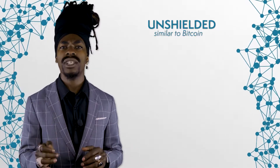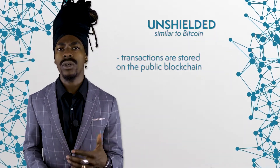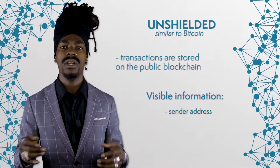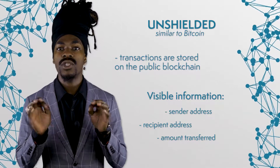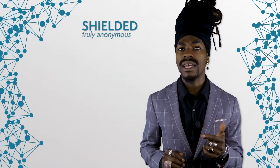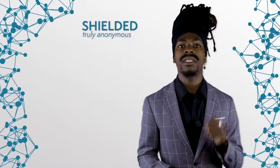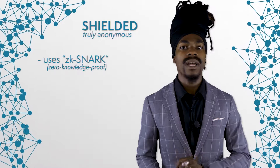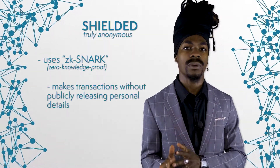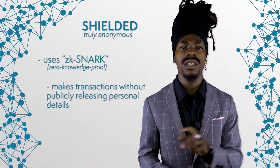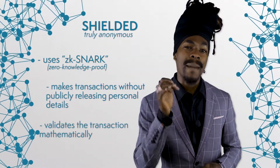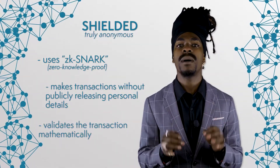Users of Zcash can choose between two types of transactions: unshielded and shielded payments. Unshielded payments are similar to the transactions of the Bitcoin network — the transactions are stored on the public blockchain and the information on the sender's address, recipient address, and amount transferred is transparent to every user in the network. In order to make truly anonymous transactions, users have to activate the optional shielded payment feature. In this case, Zcash makes use of the so-called zk-SNARK. This concept allows transactions between two participants without publicly releasing the sender's address, recipient's address, or amount transferred, by mathematically validating the transaction and preventing double spending.